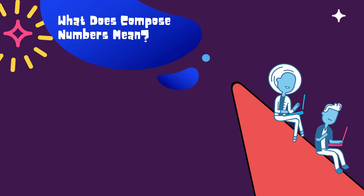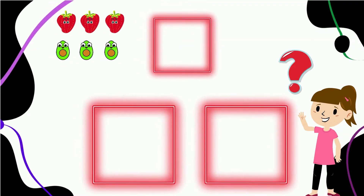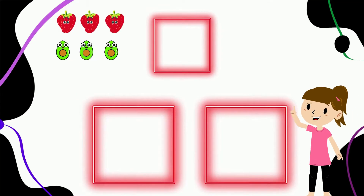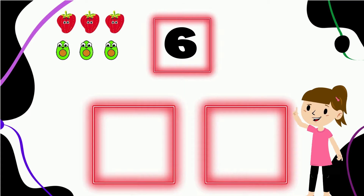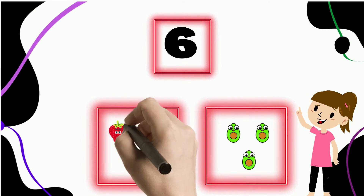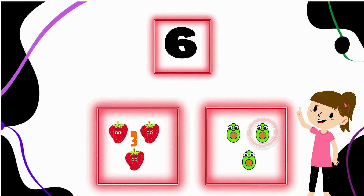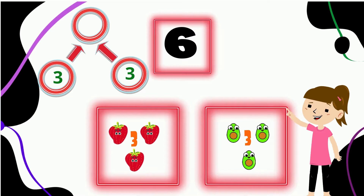For example, the number one and five together make the number six. What do you see here? That's right, we've got some fruit. Let's count: we have one, two, three, four, five, and six — six pieces of fruit. We have strawberries and avocados, so let's separate them in the boxes below. We have one, two, three strawberries and one, two, three avocados. So three and three make the number six.